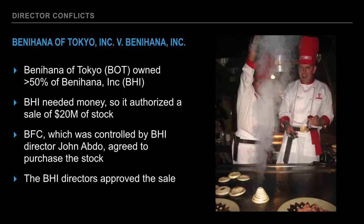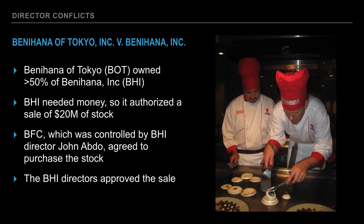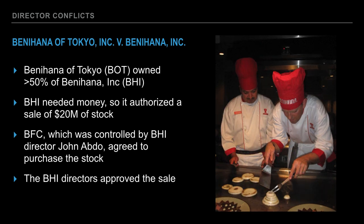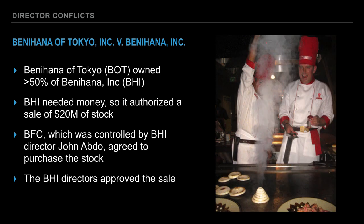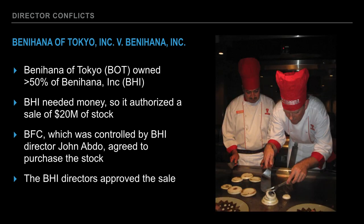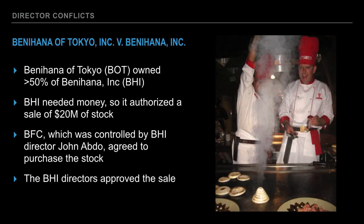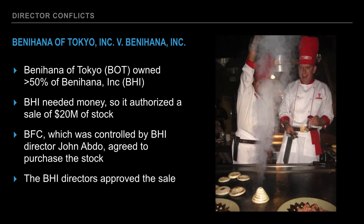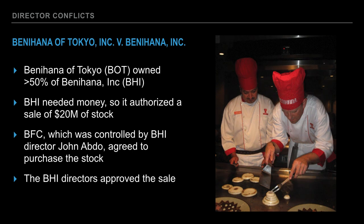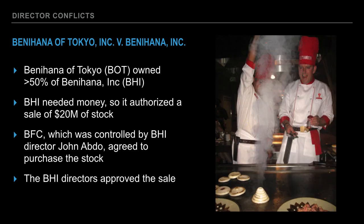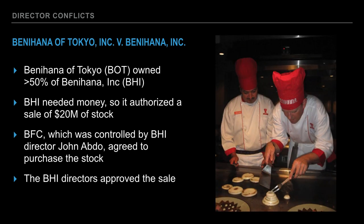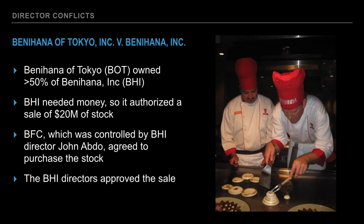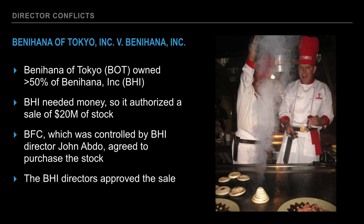Somebody wasn't so happy about this. The issuance of preferred stock diluted Rocky Aoki's share of Benihana Inc. Aoki, through Benihana of Tokyo, filed suit against all of the BHI directors except himself for breach of the duty of loyalty, and against BFC for aiding and abetting fiduciary violations. The Delaware Supreme Court discussed the application of the safe harbor provision in DGCL Section 144(a)(1) in reference to allegations that a director used confidential information against BHI. Was BHI authorized to issue the $20 million in stock to BFC? Did the BHI board breach their duty of loyalty in approving the transaction? Did the directors, including John Abdo, engage in prohibited self-dealing?